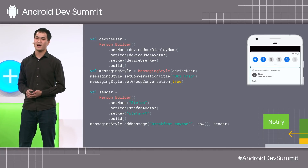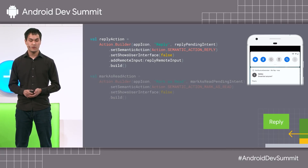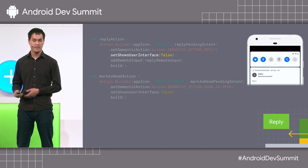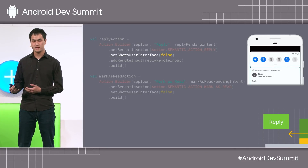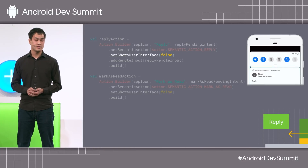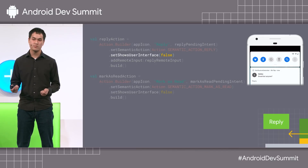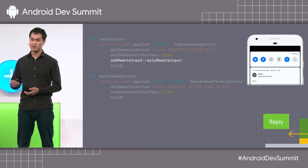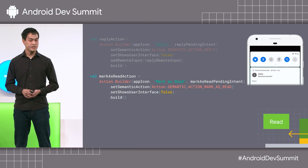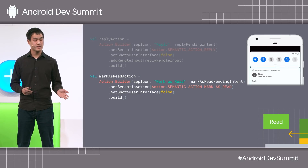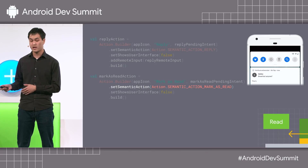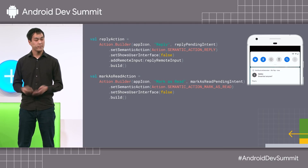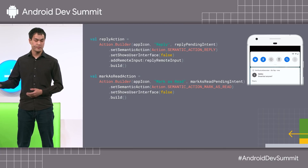With this conversation set up, it's time to add the actions. For the reply action, we instantiate an action builder and set the semantic action to semantic action reply. We must also tell the OS that firing the reply pending intent won't show any extra UI — this is especially important in Android Auto because we don't want to be distracting drivers with extra pop-ups. The reply action is then supplied with the remote input. On the mark as read side, things are done about the same way — the semantic action is set to semantic action mark as read, and again we tell the OS that firing that pending intent won't show extra UI. Note that the mark as read action does not need a remote input.